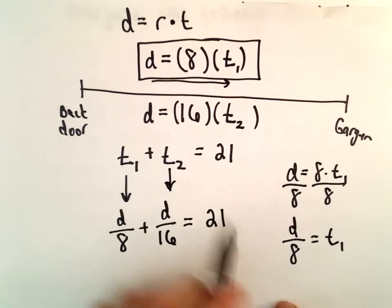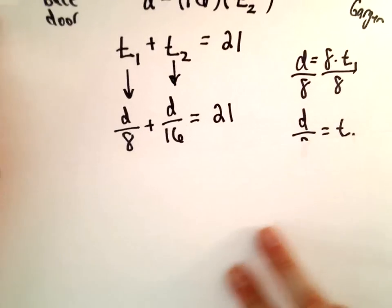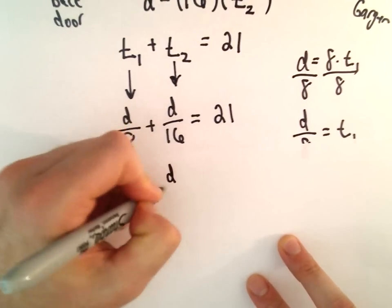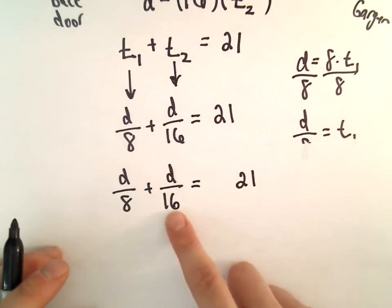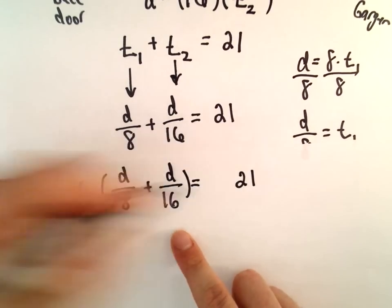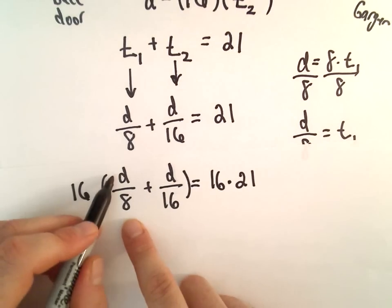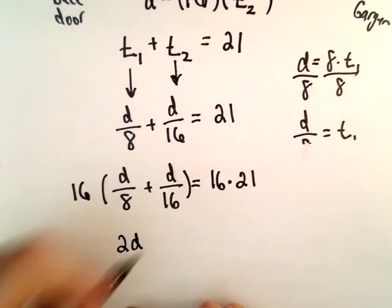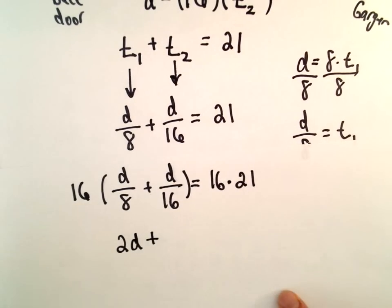So now all we have to do is solve our equation for D. What I'm going to do to get rid of the fractions on the left side, I'm going to multiply both sides by 16. Okay, so we would get 16D over 8. 16 over 8 would be 2D. Then we would get 16D over 16. So those would cancel out.